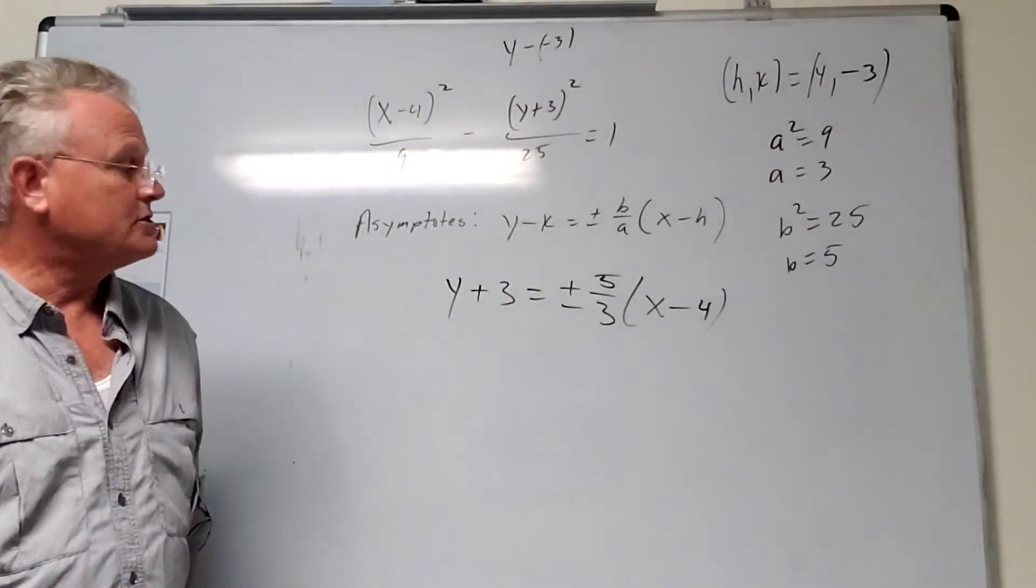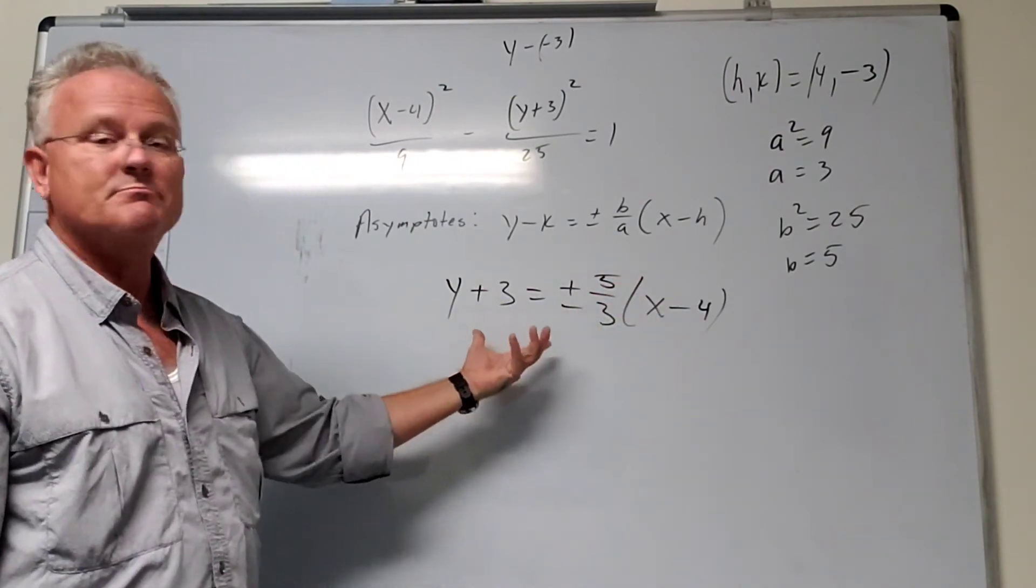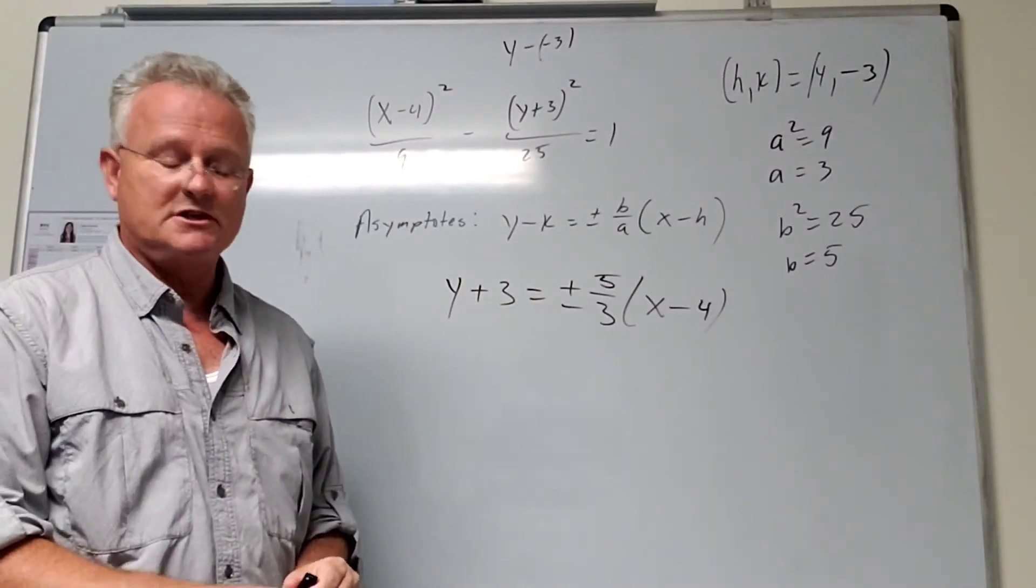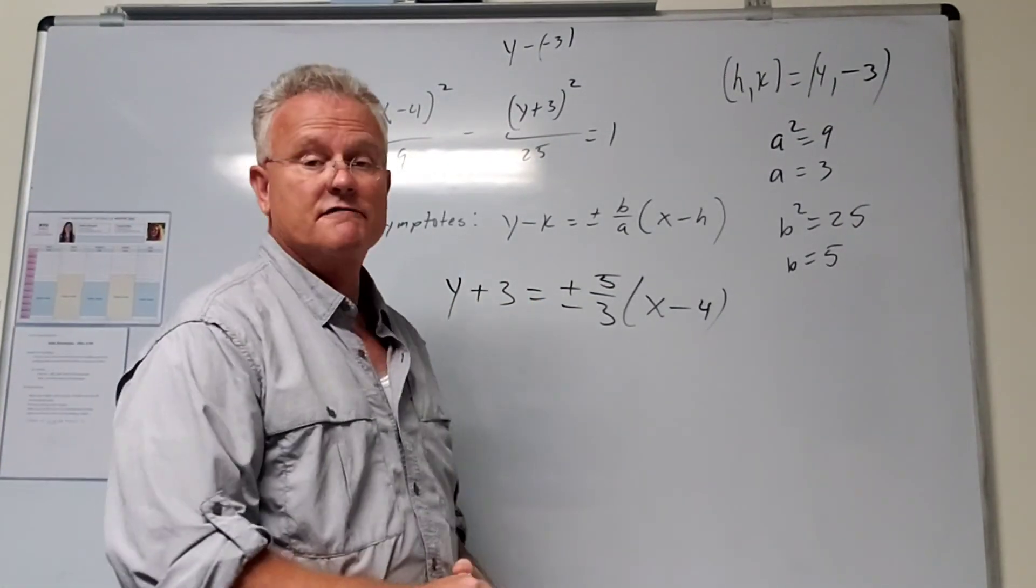And that's your equation. You could distribute and simplify a little bit, but that's the equation of your asymptote.